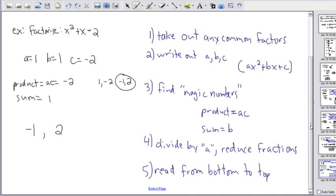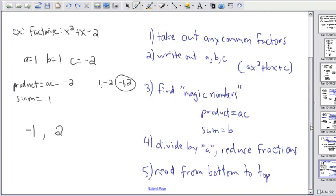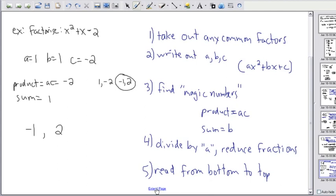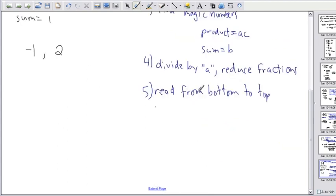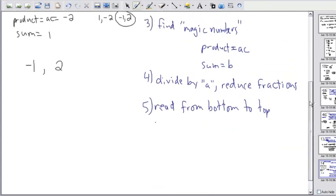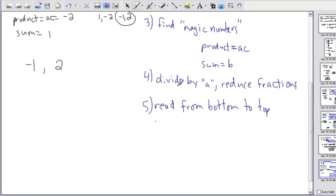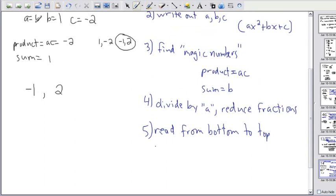Now like I said, most teachers' factoring tricks do start off with these first three steps. And then comes step number 4, number 5. And this is beautiful, it works really well. Now I want to divide both the numbers by a. Remember my a value in this case was 1. So I'm going to divide this by 1, I'm going to divide this by 1, and then I should reduce the fractions if possible. In this case I can't reduce them anymore.